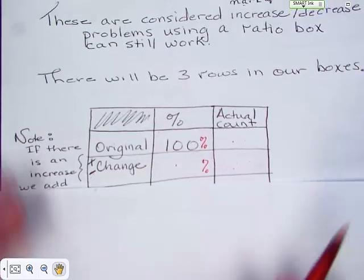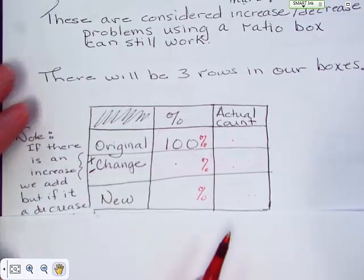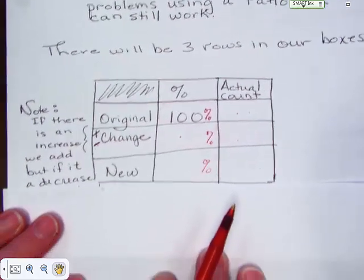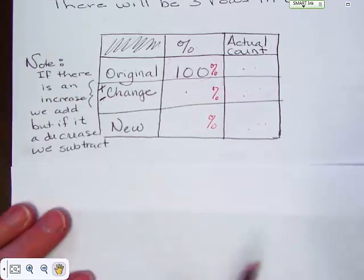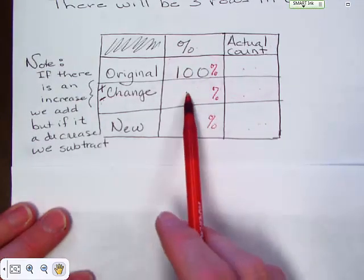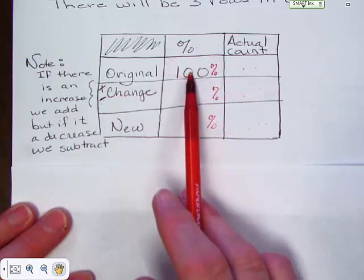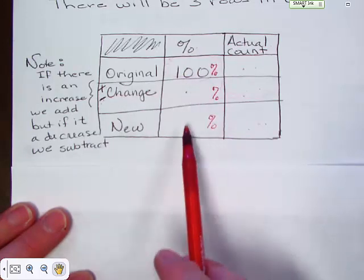And in this last column you would have the new price or the new percentage. So you would have one hundred plus whatever it is equals a total, or one hundred minus whatever this is equals a total.